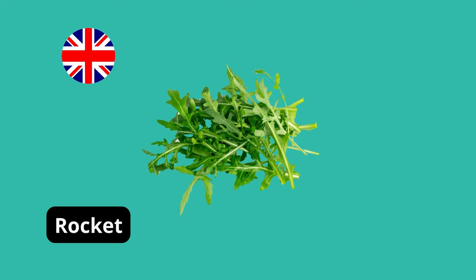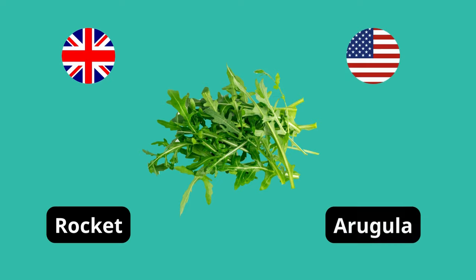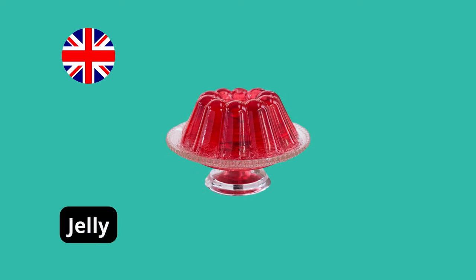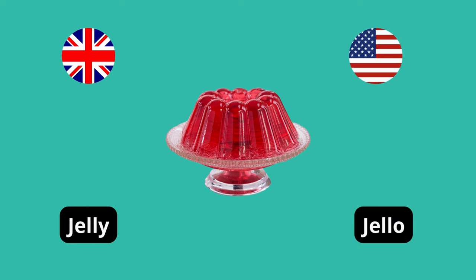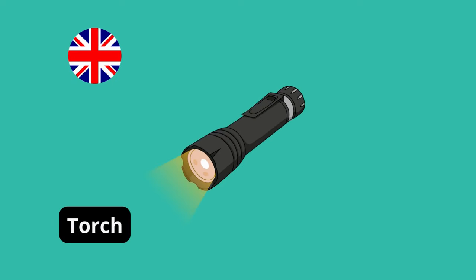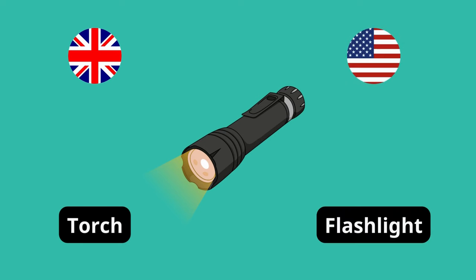Rocket (British English) — Arugula (American English). Jelly (British English) — Jello (American English). Torch (British English) — Flashlight (American English).